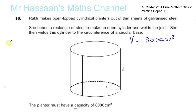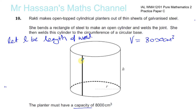Let L be the length of the welding. The length of the weld is going to go down the side, which is H, plus across the circumference — welding along the circumference so the cylinder sticks to the base. There's no welding at the top because it's open-topped. So it's just H plus 2πR, which gives the total length of weld needed, and we want that to be a minimum.